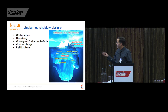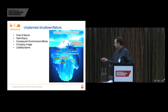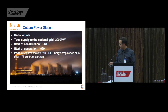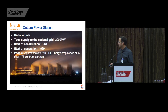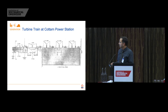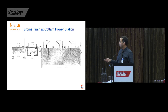When we do have unplanned shutdowns or major events, there is a significant element of known cost, and then there are hidden costs which can be a lot more significant. Just a bit about Cottam Power Station: it has four units, it's a 2,000 megawatt station, built in 1961, started generating in 1969, and we have approximately 250 employees with 175 contract partners. It's a very standard 500 megawatt unit with HP, IP, and three LPs on the shaft line.